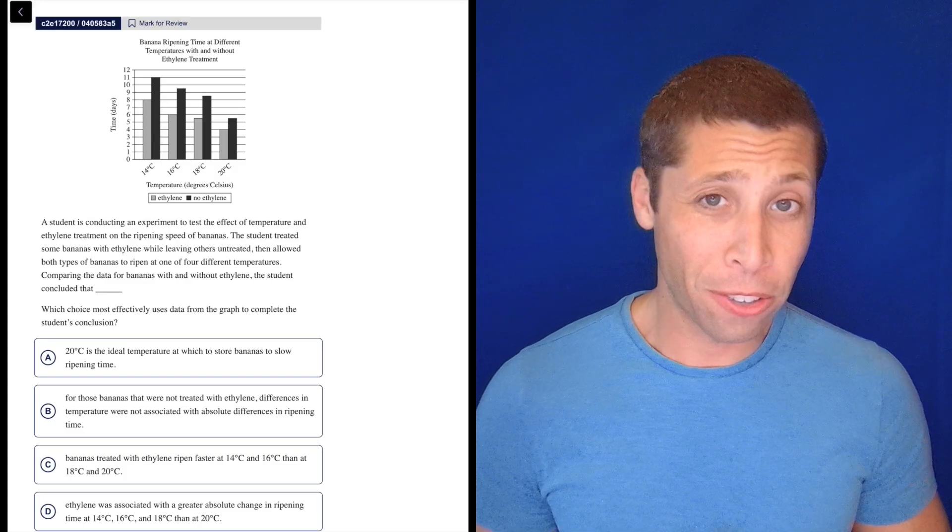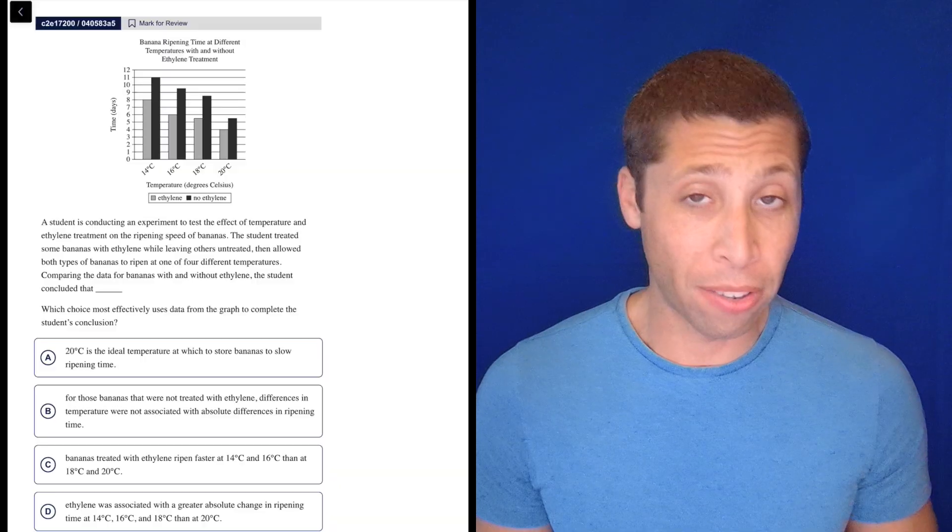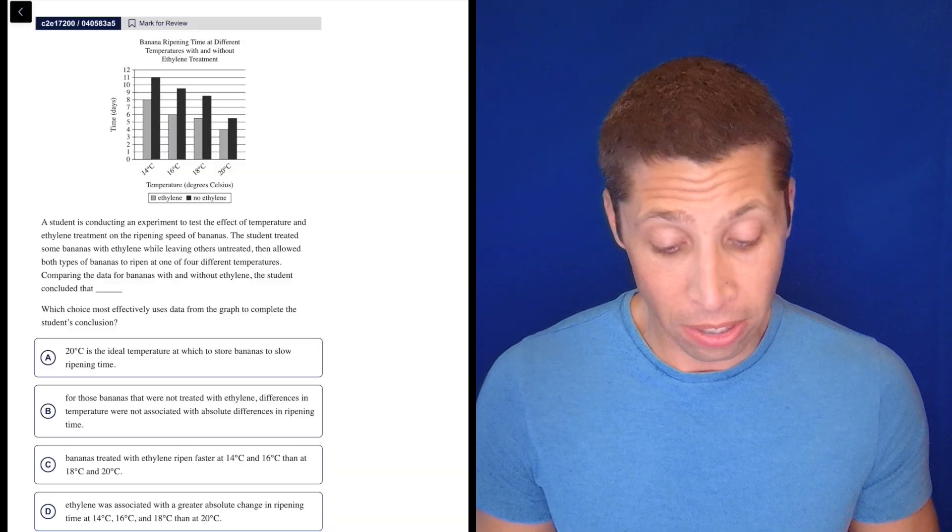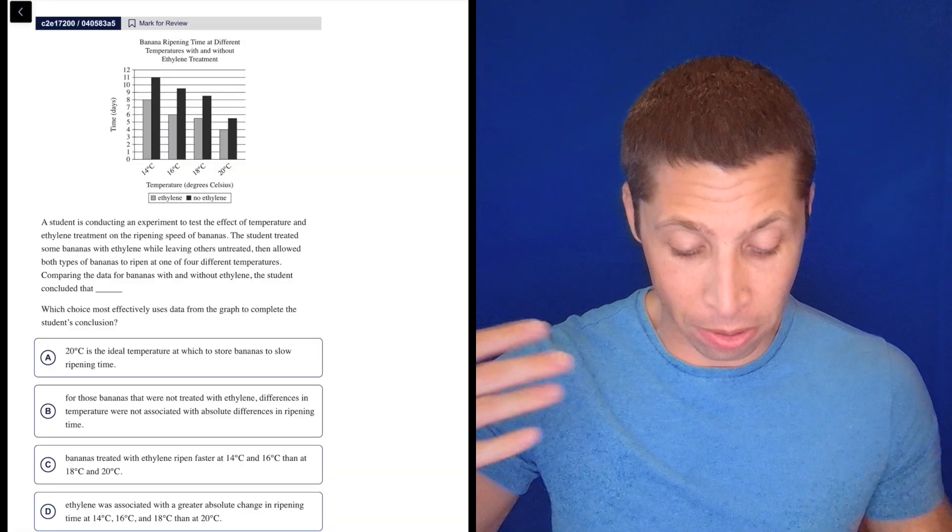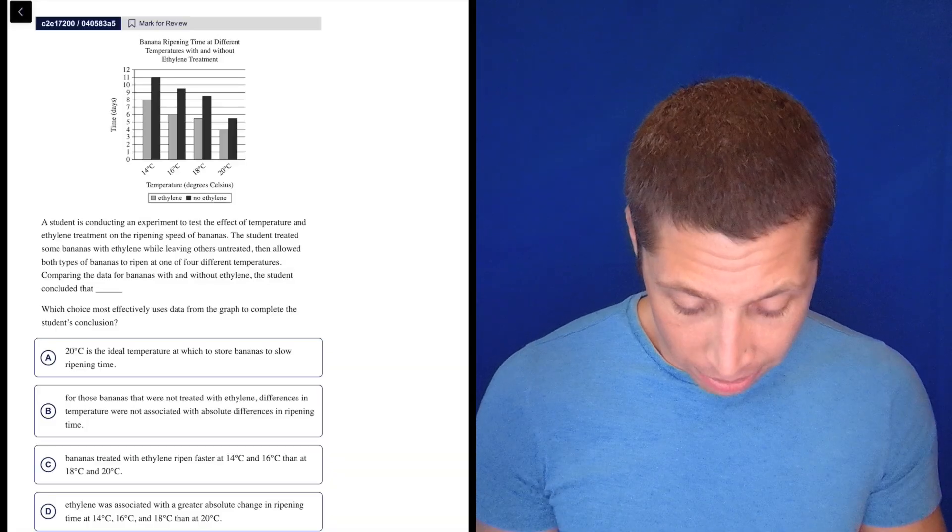Another graph question. If I saw this on the test and time is ticking, I actually might want to do a question like this. The passage is kind of short, the graph looks easy to understand. The bars are going down, there's a gray bar and a black bar, and they seem to be following a similar pattern. So I don't know, it doesn't look too bad, but let's give it a shot.